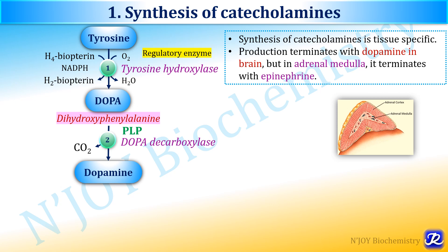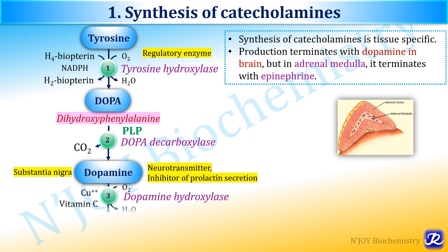The second reaction is a decarboxylation reaction catalyzed by the pyridoxal phosphate-dependent enzyme DOPA decarboxylase, in which dopamine is formed. This dopamine is formed in the substantia nigra and some parts of the brain. It is a neurotransmitter as well as an inhibitor of prolactin secretion. From dopamine in the adrenal medulla, norepinephrine is formed by the action of the enzyme dopamine hydroxylase.